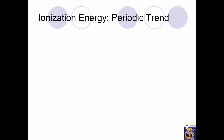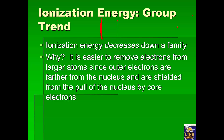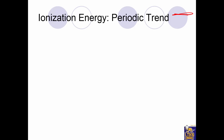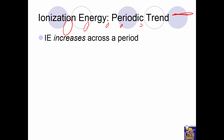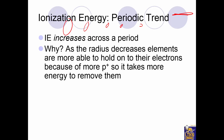Is there a trend in the period? Group trends are up and down; periodic trends go across. Atoms get smaller going across, so ionization energy increases going across the period. As atoms get smaller they also get a stronger nucleus, and their electrons are pulled in closer, so it takes more energy to remove an electron. Atoms with a stronger nuclear pull going across the periodic table are harder to ionize.